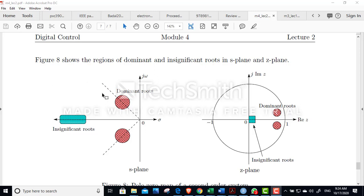This is the time domain. The dominant are close to the imaginary axis. The insignificant. The imaginary axis. This is the domain. The insignificant. The dominant. The unit circle.